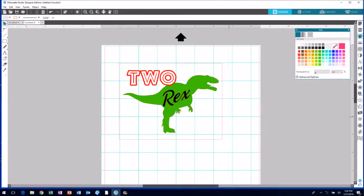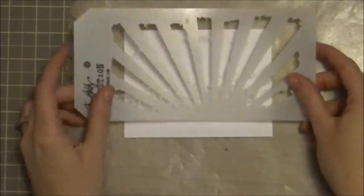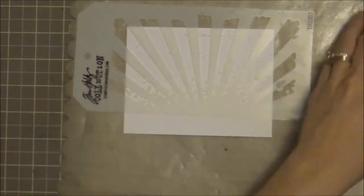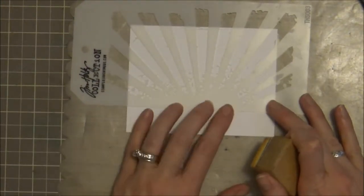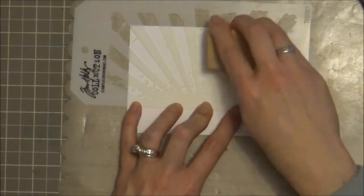So cut those out on Neenah solar white cardstock and I'm going to go ahead and start on my base, my background. I'm using a Tim Holtz stencil called Rays and starting with a little bit of scattered straw distress ink. Now normally I would tape down my card and tape down my stencil, but I like to live dangerously, so I'm just holding this with my left hand and working with my right with the ink.